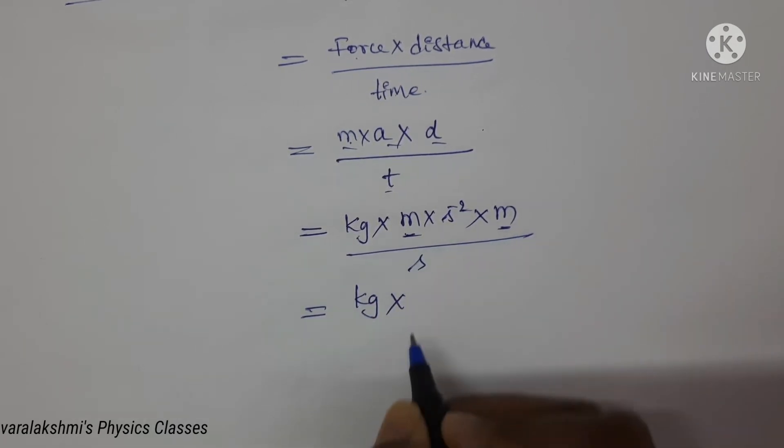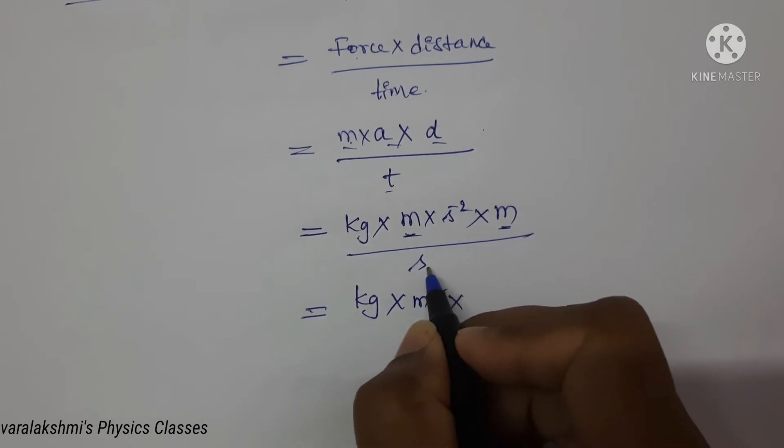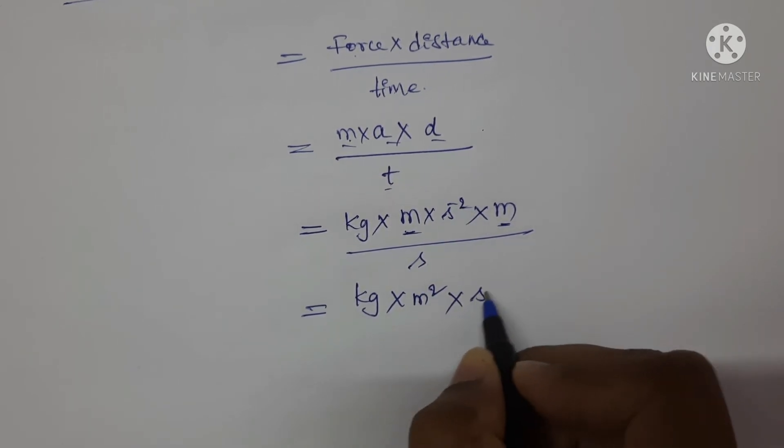A meter and meter, so meter square, and by writing this second on the numerator, which will be s to the power of minus 3.